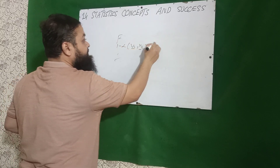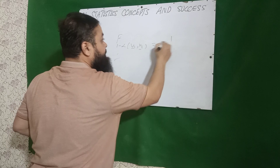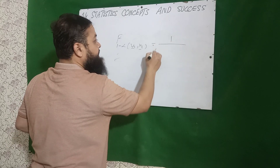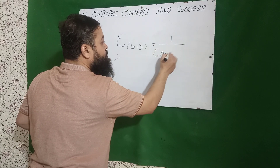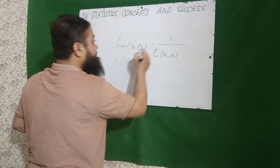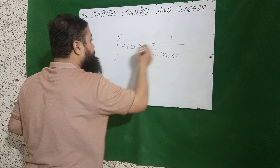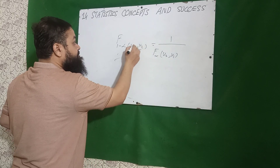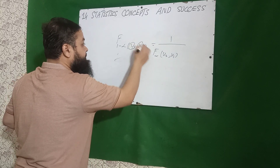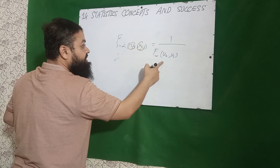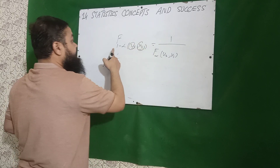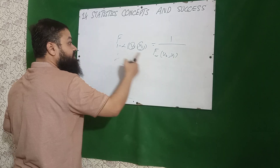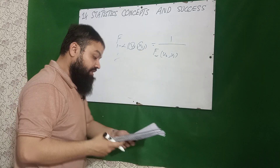In the F-distribution: F of (1 minus alpha, v1, v2) equals 1 over F(alpha, v2, v1). When you take the reciprocal, the degrees of freedom are swapped — v2 becomes the first and v1 becomes the second — and 1 minus alpha becomes simply alpha.